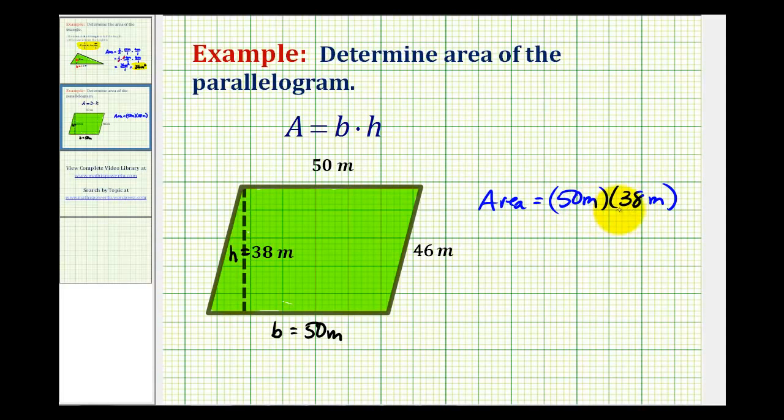To determine this product, we'll use the commutative property and change the order of this multiplication. So we'll have 38 times 50.